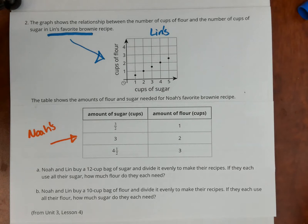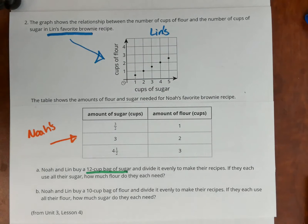Question number A: Noah and Lynn buy a 12 pound bag of sugar and divide it evenly to make their recipes. If they each use all their sugar, how much do they each need? So I underlined that part right there in green for the 12 cups of sugar. Now when they divide it evenly, how many cups of sugar will each person get? Each person will get six cups of sugar. Each one gets six cups of sugar.